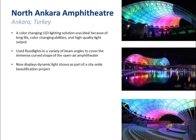At the North Ankara Amphitheater in Ankara, Turkey, they had a beautiful amphitheater with a great awning over the building that they wanted to highlight. They added a fairly large number — probably over 40 — large-scale color-changing flood lights. Being LEDs, in what might be a difficult area to access, there's no need to worry about lamp changes or color changes, as that's all inherent in a color-changing LED system. They used a variety of beam angles to cover different areas and throw distances, and were able to draw people into the amphitheater by flooding it with dynamic color-changing light.